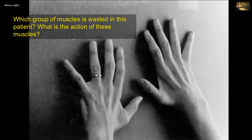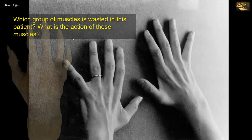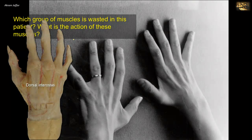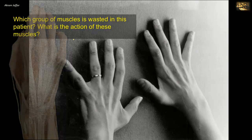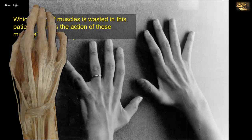Which group of muscles is wasted in this patient, and what is the action of these muscles? Apparently, from this photograph, the wasted muscles are the dorsal interossei. As their name indicates, they are located between the metacarpal bones, between bones. The dorsal interossei are bulky, particularly the first dorsal interosseous, which is located between the thumb and the index finger. Adduct your thumb and note the bulk of the first dorsal interosseous muscle.